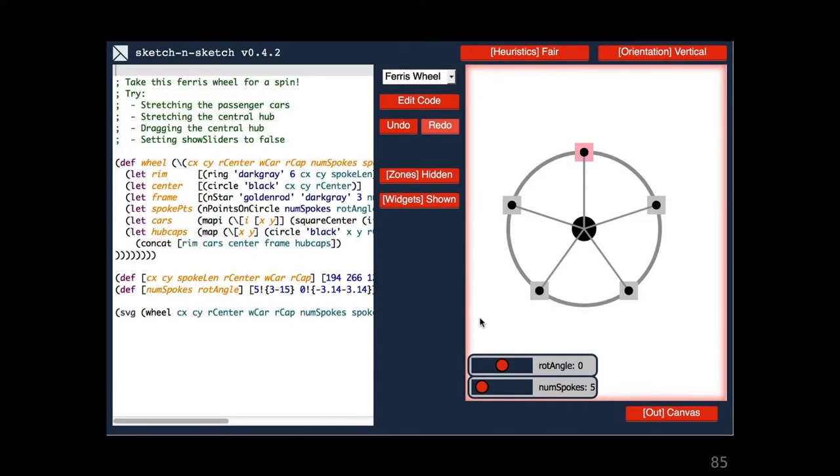Here's a ferris wheel design. Imagine how difficult it would be to add more spokes to this wheel in a traditional editor. In Sketch and Sketch, it's easy.